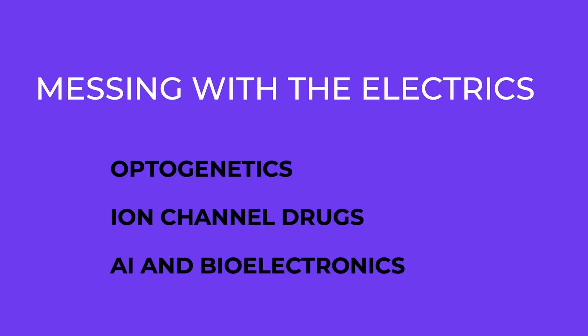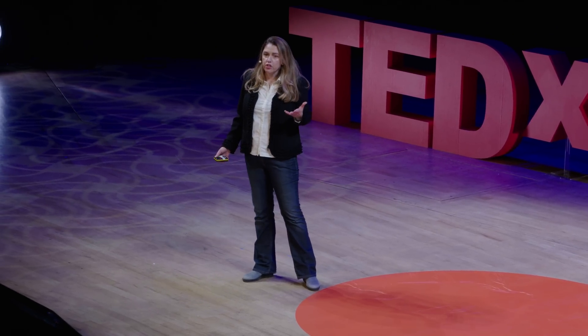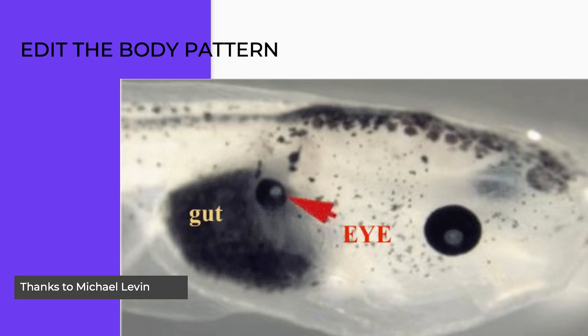But we don't just have tools now that can observe the electrics of the body — we have tools that are able to manipulate them. Ion channel drugs are the most interesting. The patch clamp discovers the ion channels, and then immediately we get to work making drugs that can open these or pry them shut on command. Mostly they're used for nervous system disorders, but over the past 10 to 20 years, researchers have started using them for other things — mainly to try to edit the body pattern. And they've managed it.